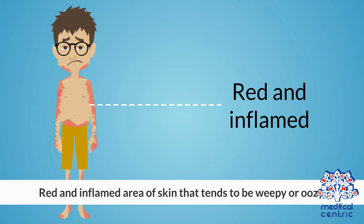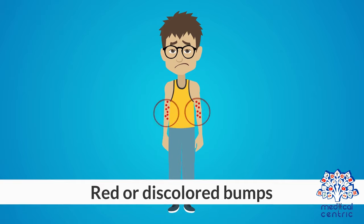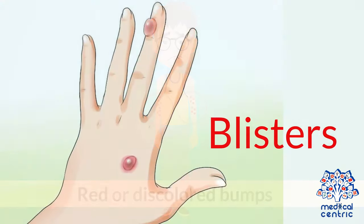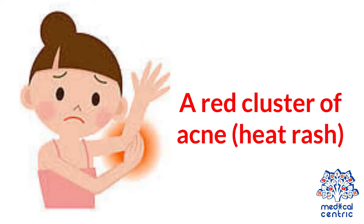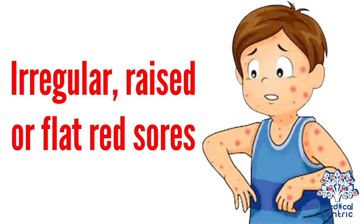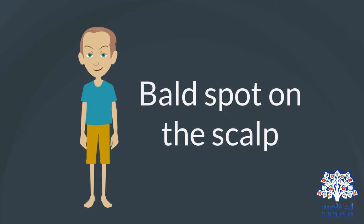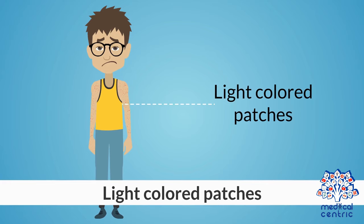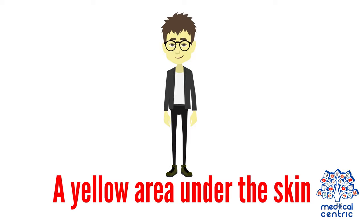Symptoms of skin rash include red and inflamed areas of skin that tend to be weepy or oozy, pus-filled crusty swellings, red or discolored bumps, blisters, a slightly raised portion of the skin that may be painful or itchy, a red cluster of acne as in heat rash, irregular raised or flat red sores, dry scaly skin, bald spots on the scalp, light-colored patches, lots of white spots, and a yellow area under the skin.